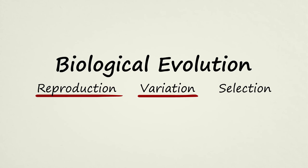biological evolution typically requires three conditions: reproduction, variation, and selection. Let's see how this works.